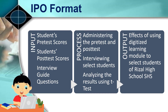This will help readers in understanding your plan. For our example, you can see that the inputs are students' pre-test scores, students' post-test scores, and interview guide questions. For the process: administering the pre-test and post-test, interviewing select students, and analyzing the results. For the output: effects of using a digitized learning module on select students of Rizal High School Senior High School.